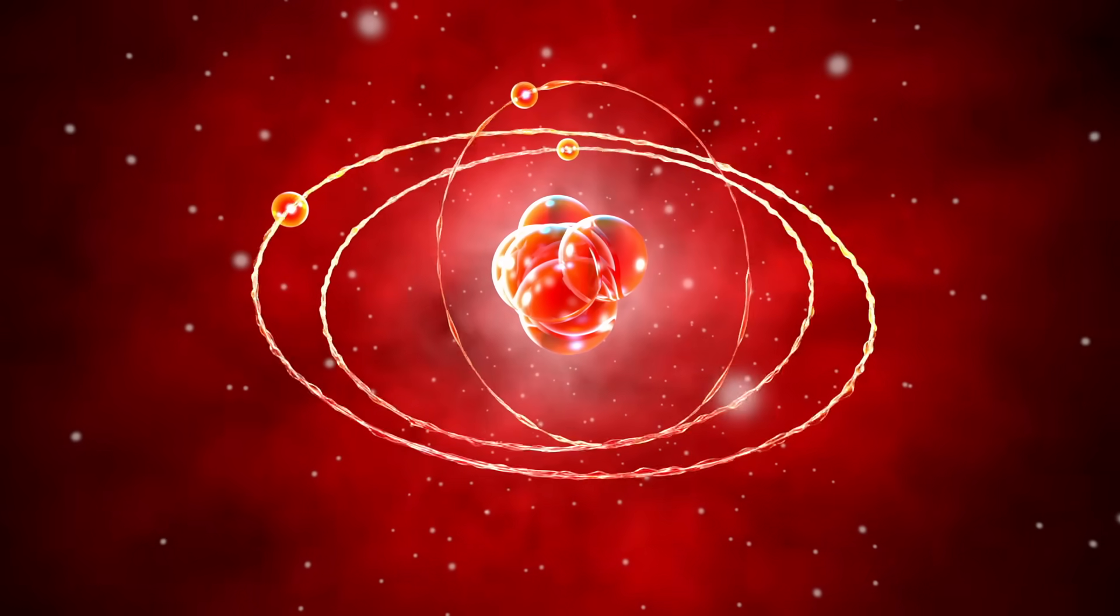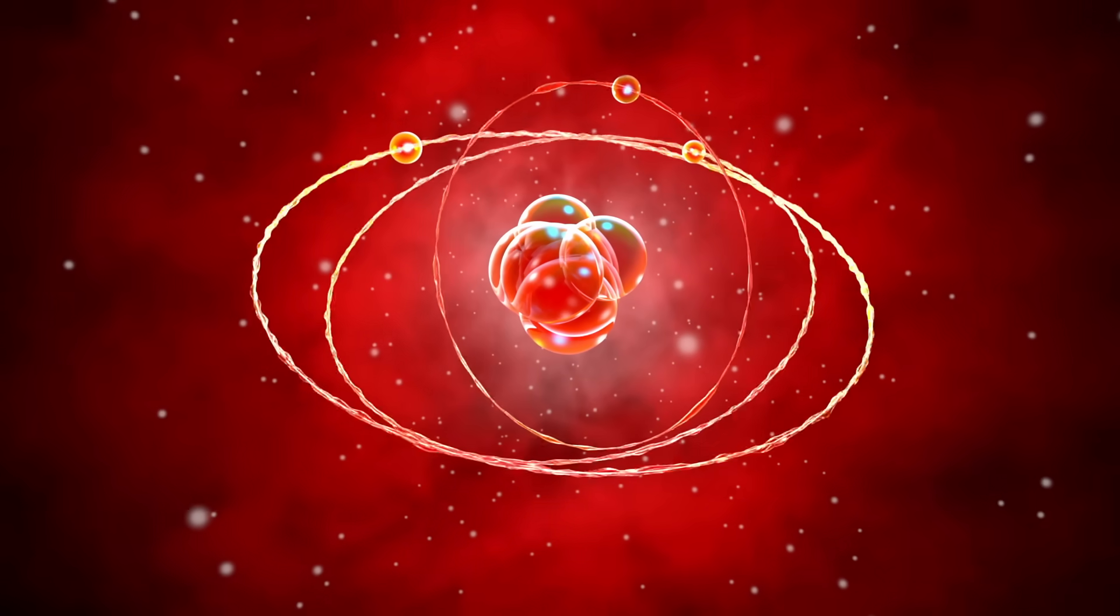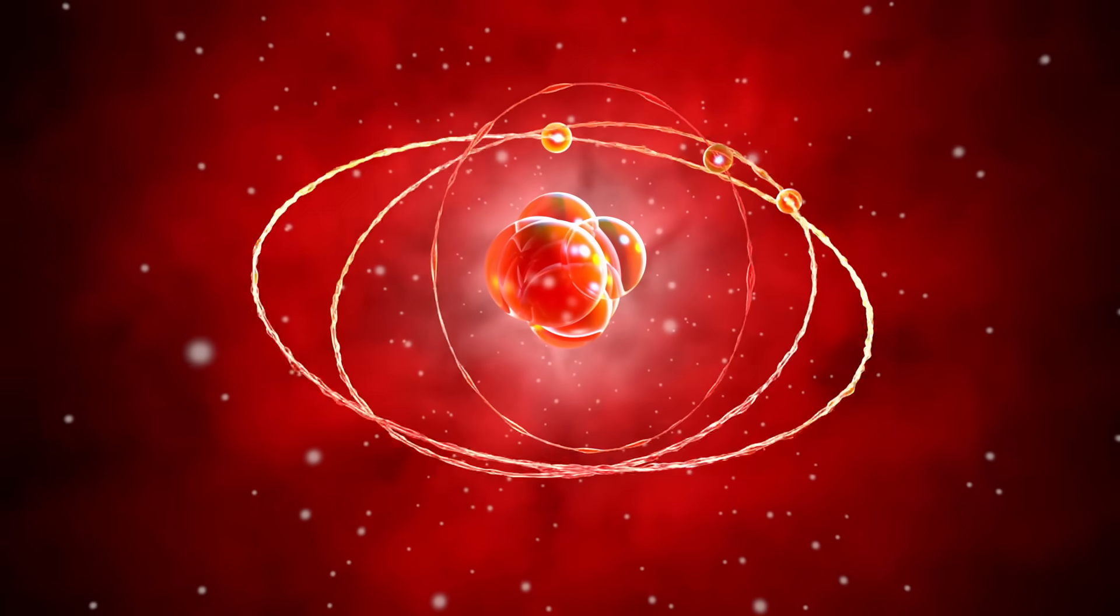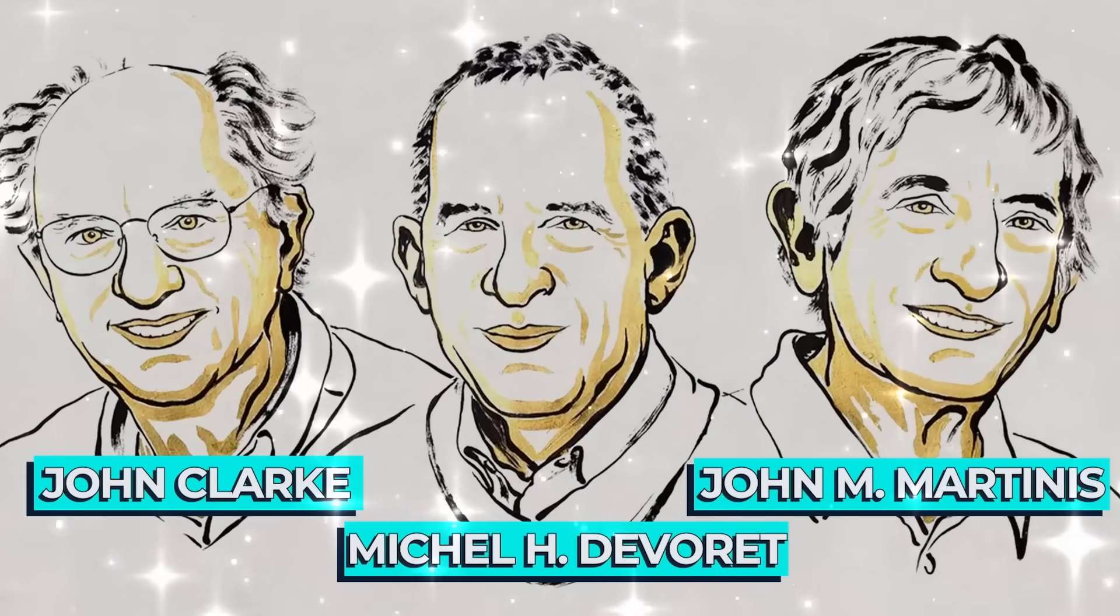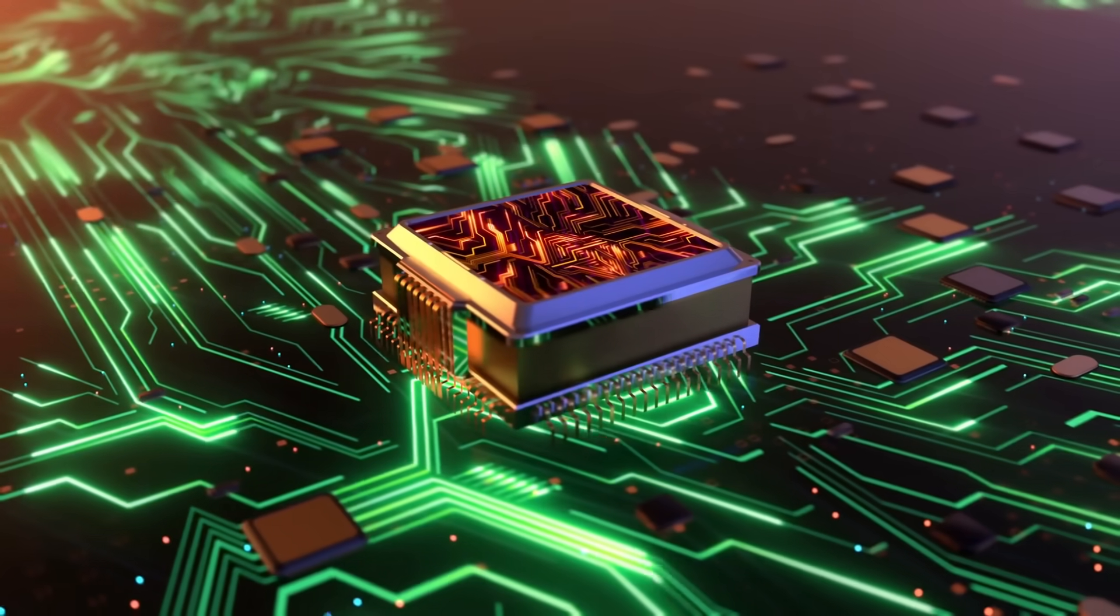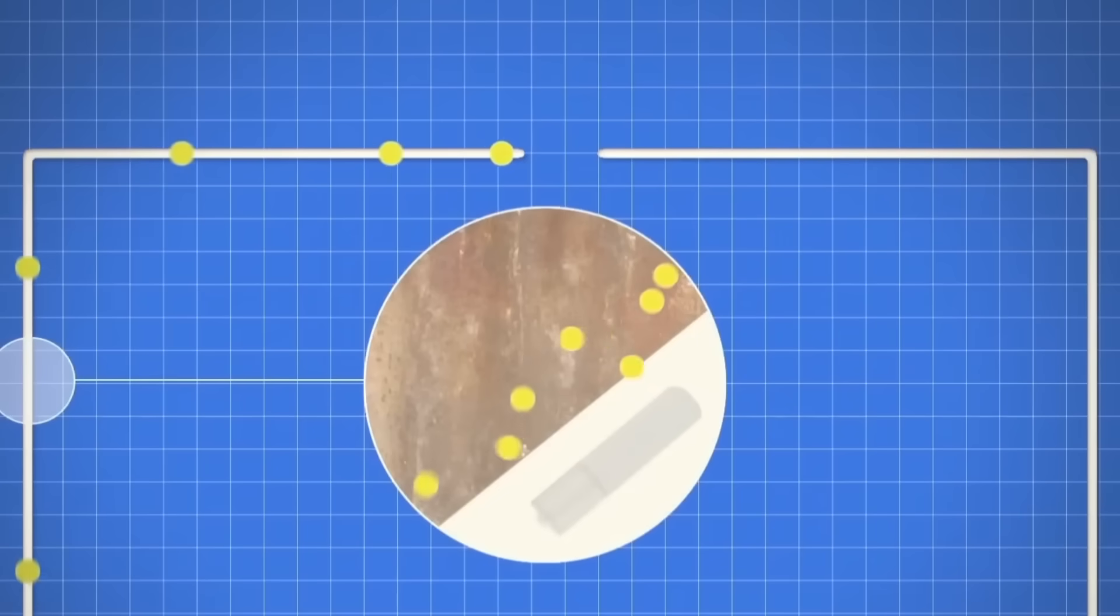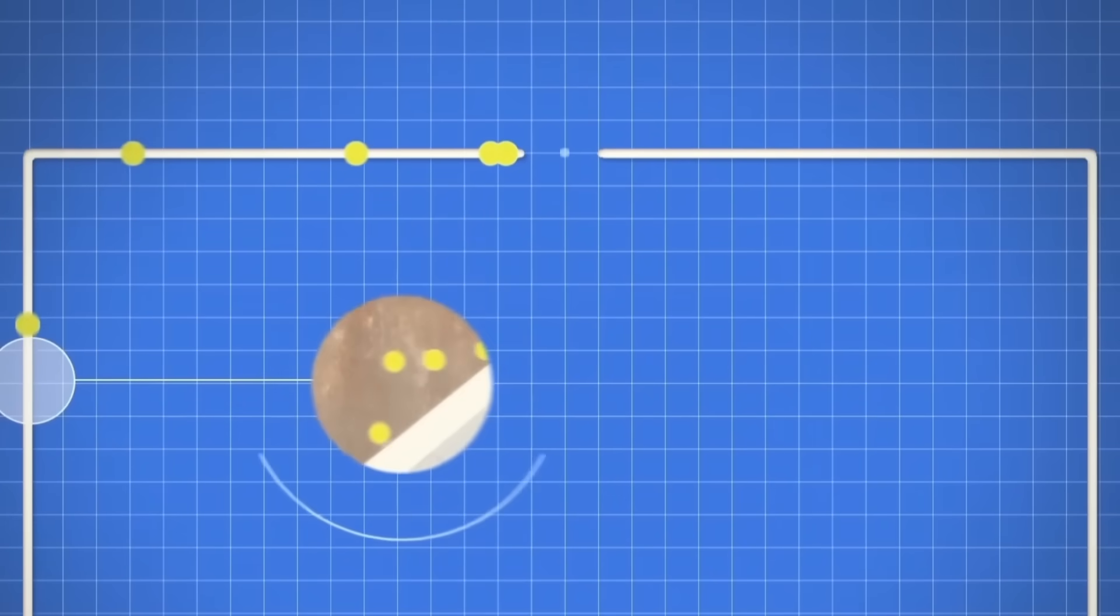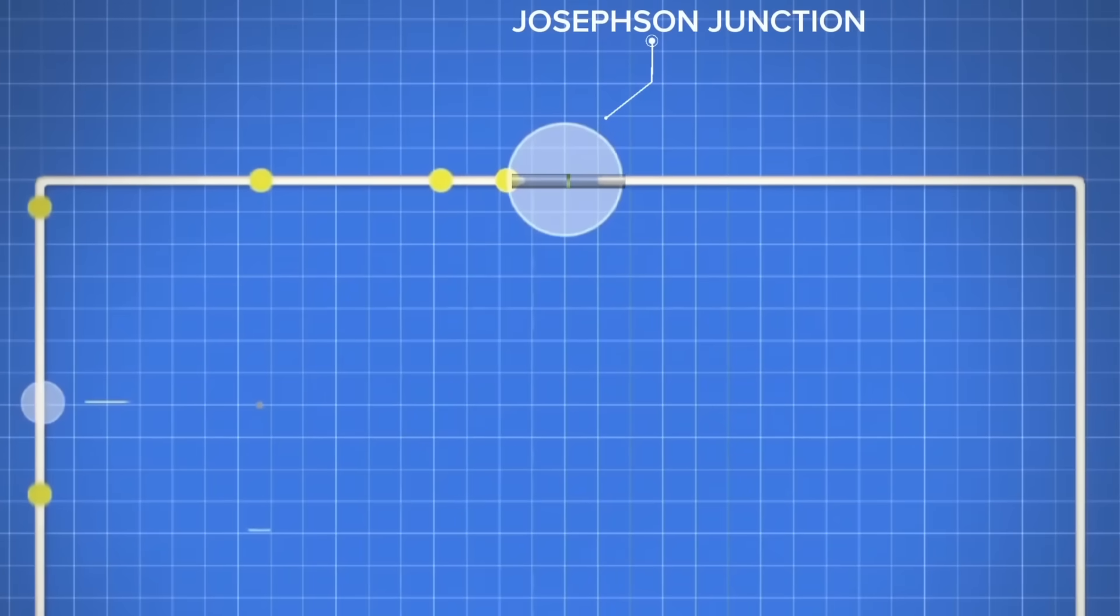But until recently, scientists couldn't harness this effect on a scale larger than a single atom. That changed when Clarke, Deverett, and Martinis began designing devices that could control tunneling itself. Their tool of choice? A tiny, almost invisible structure, called a Josephson Junction.